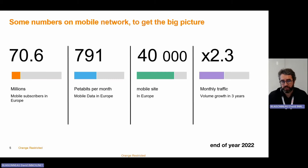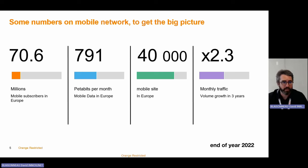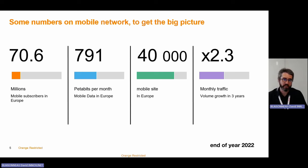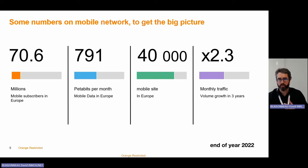What is a mobile network? To give you a big picture, here are some numbers. Orange is dealing with more than 70 million mobile subscribers in Europe. Those subscribers are consuming about 800 petabytes of data in Europe per month. All the subscribers are spread around 40,000 mobile sites in Europe, and the traffic is growing more than 20% in three years. So these are huge numbers — a huge data network that we have to deal with.